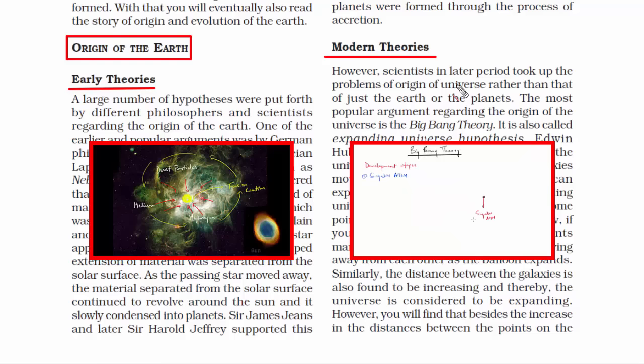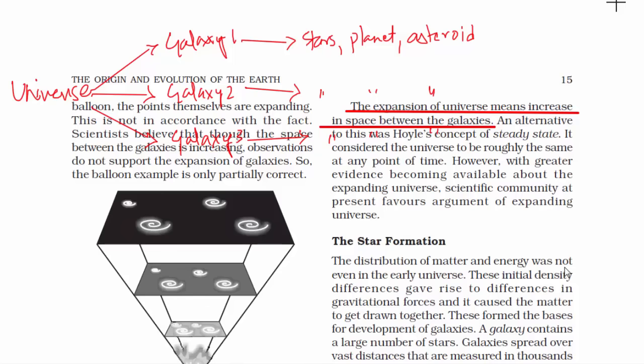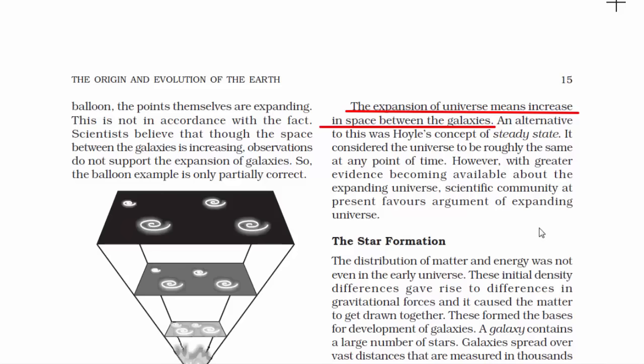The expansion of universe means increase in space between the galaxies. Always remember this order: a universe consists of more than one galaxy, and one galaxy consists of moons, asteroids, planets and stars. So the solar system that we are part of is one galaxy. The name of our galaxy is the Milky Way. Though we know there are many other galaxies, we do not know whether there is another universe. So the scientific community only believes in the theory that the universe is expanding.